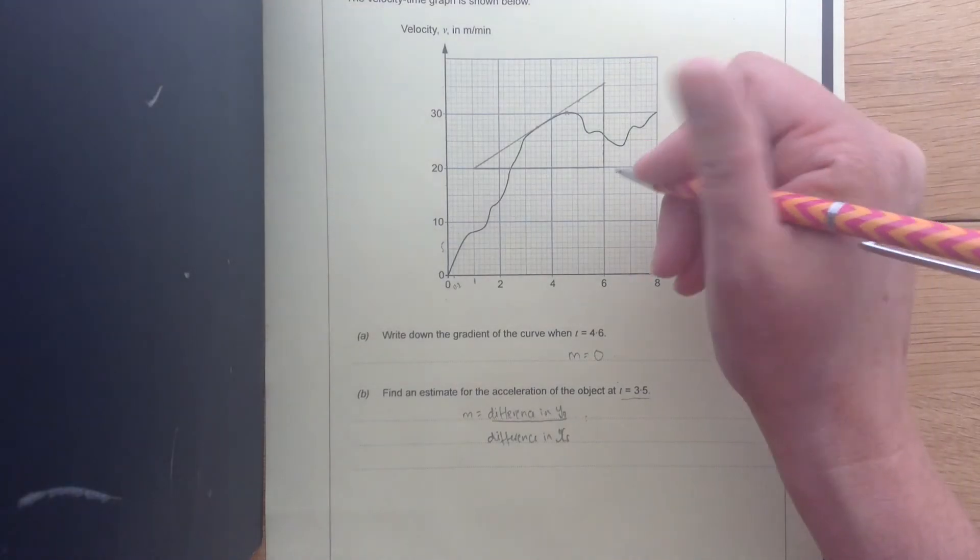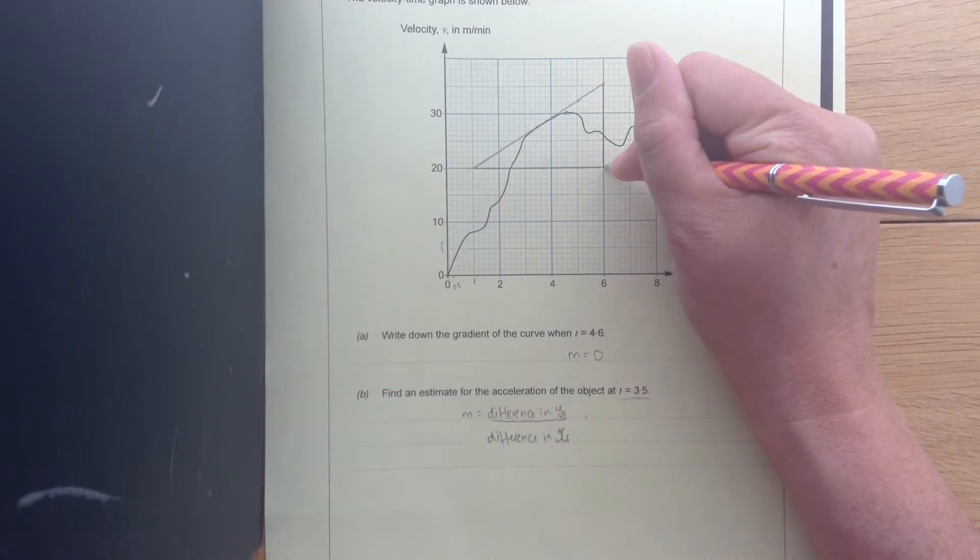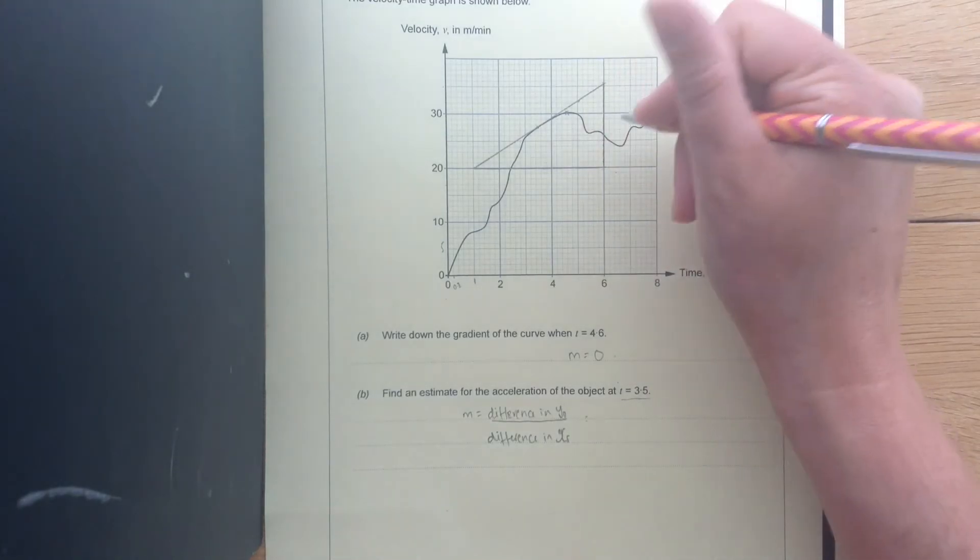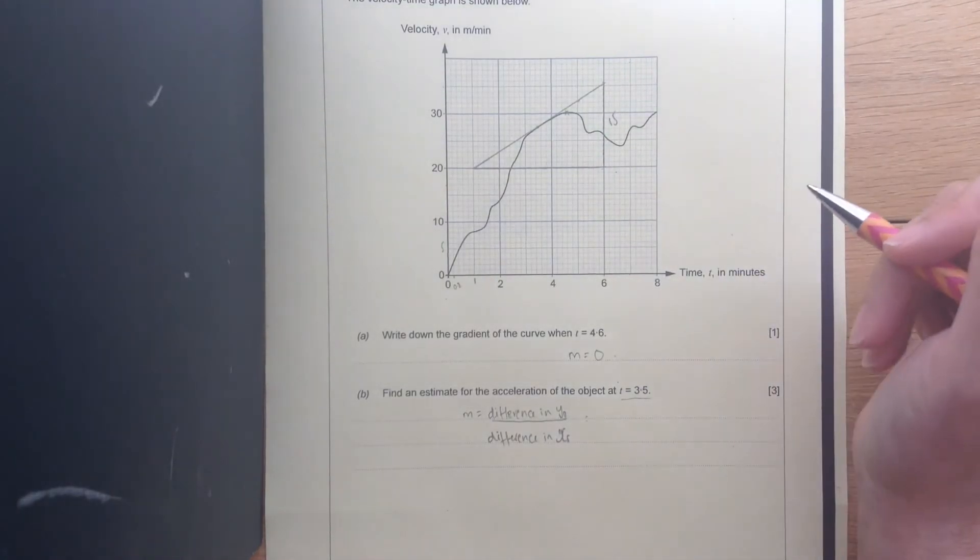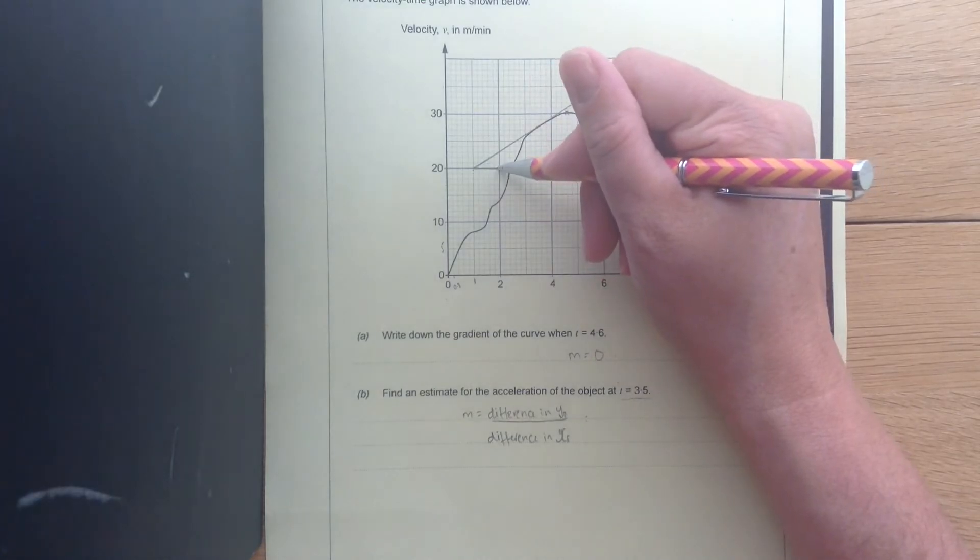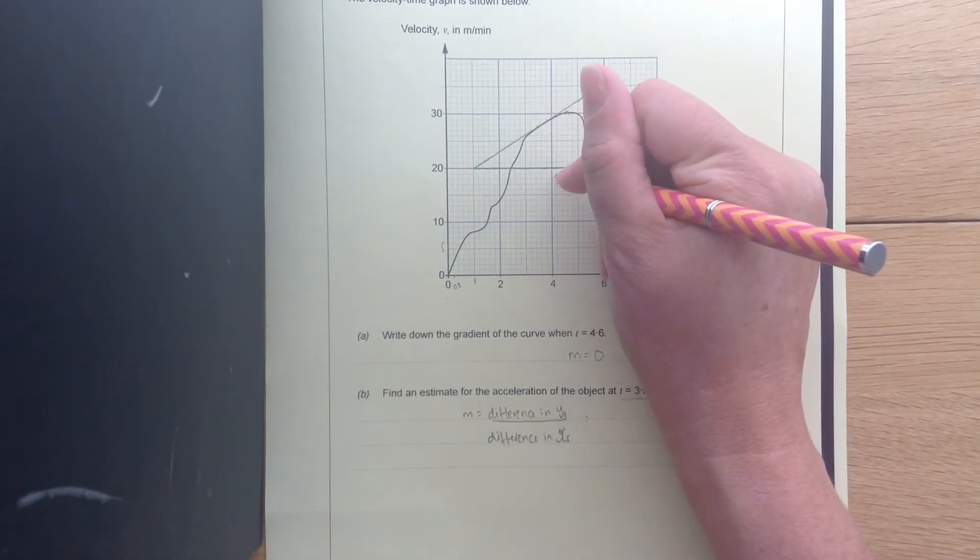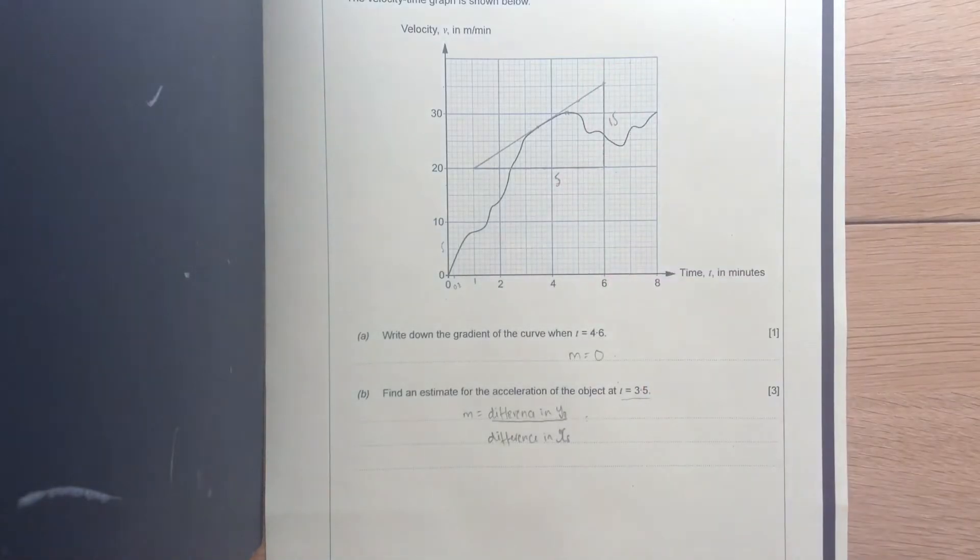So our difference in y's goes from 20 to 35. So our difference in y's is 15. Our height is 15. Then going across, we've got 1, 2, 3, 4, 5. So our difference in x's is 5.